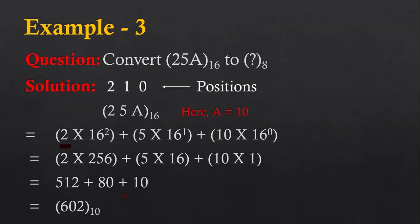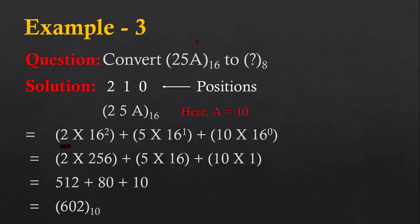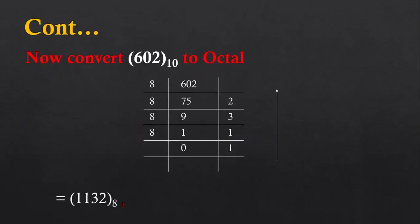Now I have to convert this decimal number 602 into an octal number, using the division remainder method. 602 is divided by 8 — it goes 75 times with remainder 2. 75 is divided by 8 — 9 times with remainder 3. 9 is divided by 8 — 1 time with remainder 1. 1 can't be divided further, so remainder is 1. Putting all these remainder digits from bottom to top gives 1132. So, hexadecimal number 25A has an equivalent octal number of 1132.